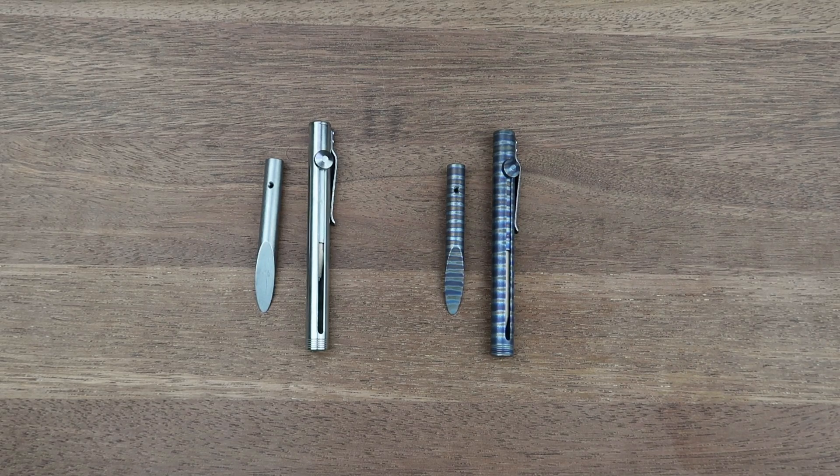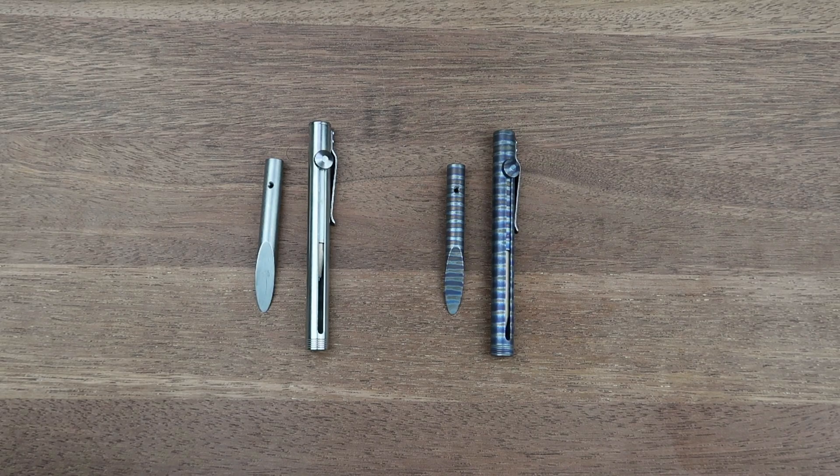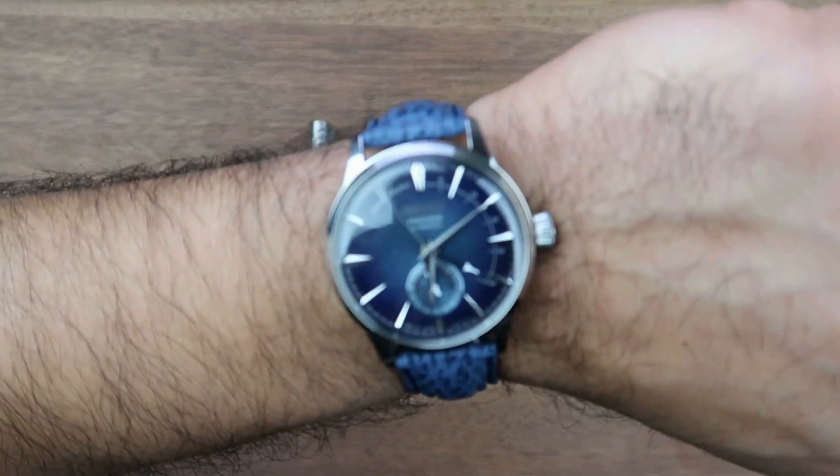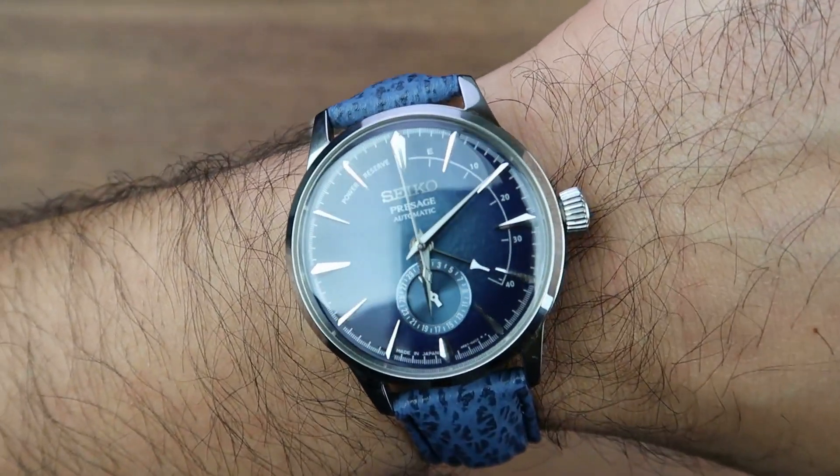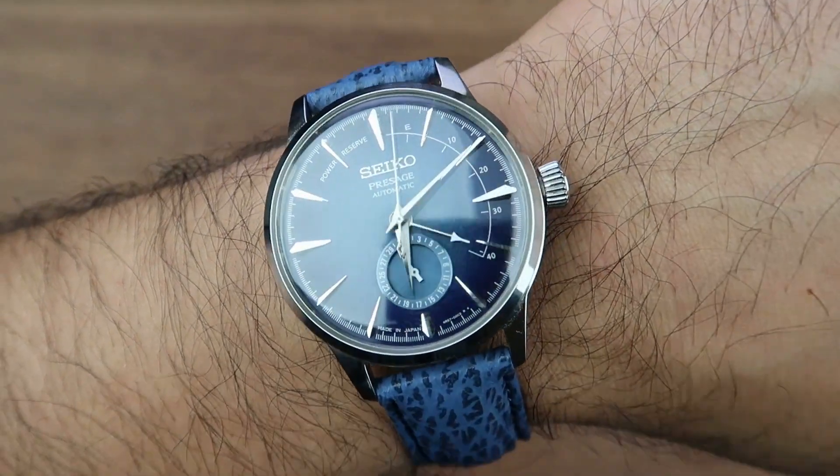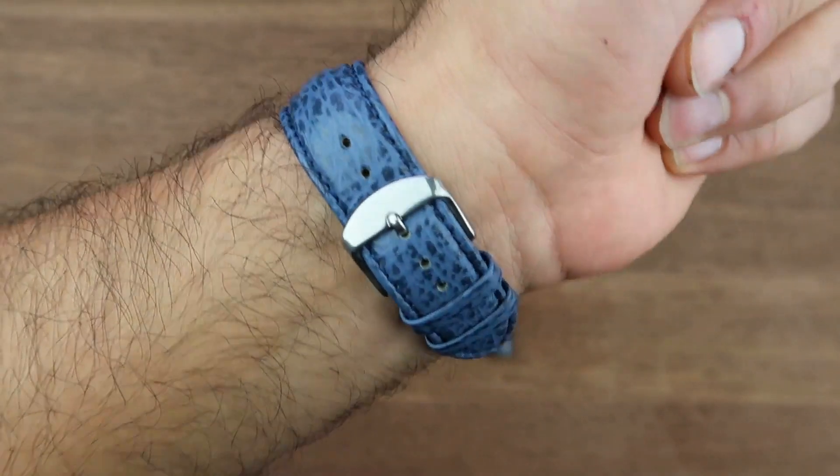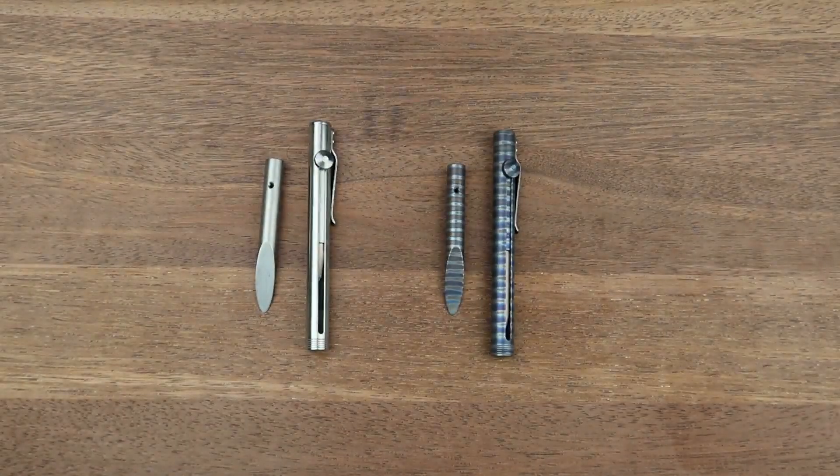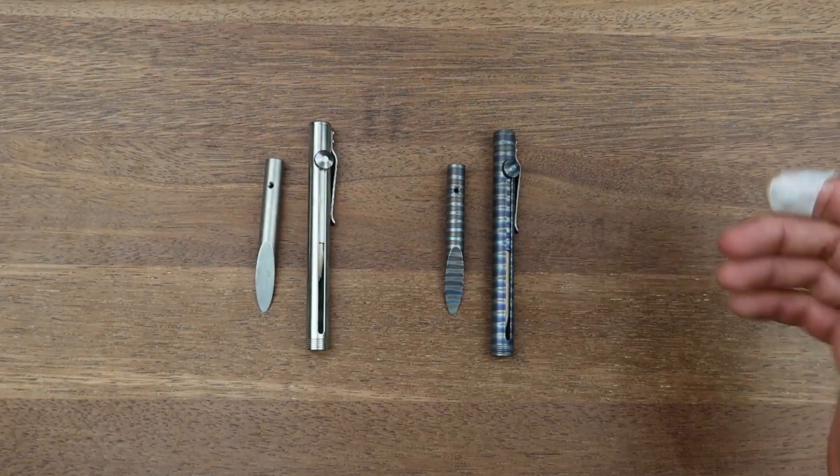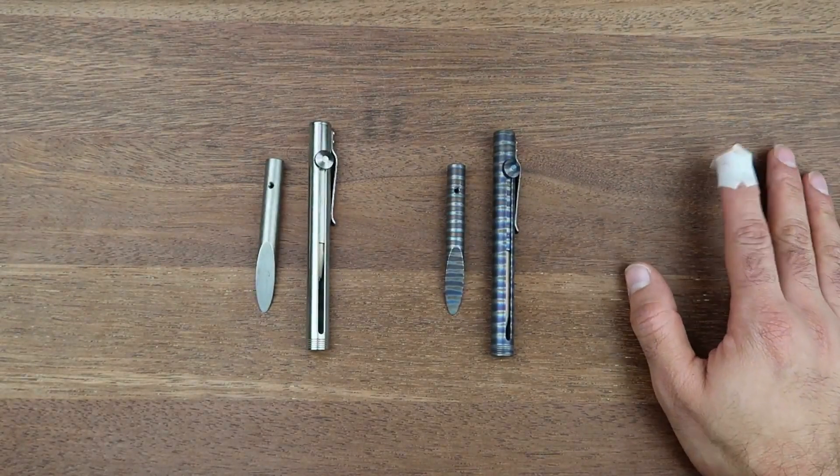Before we get to that, do a quick wristwatch check. Still the Seiko Presage Cocktail Time Starlight, the limited edition with a very beautiful blue dial on a blue shark skin leather strap. So let's get to the tactical titanium MFEDC pencil holder, quite a mouthful of a name.